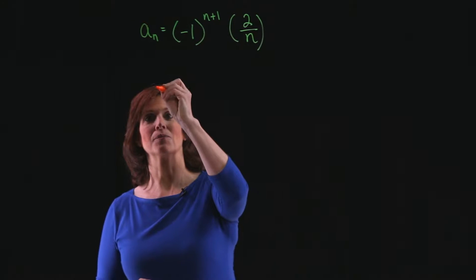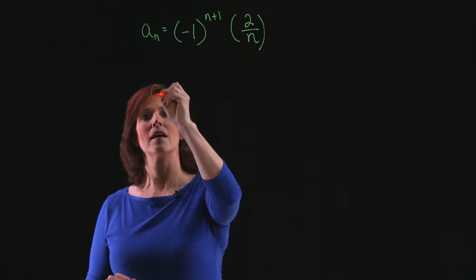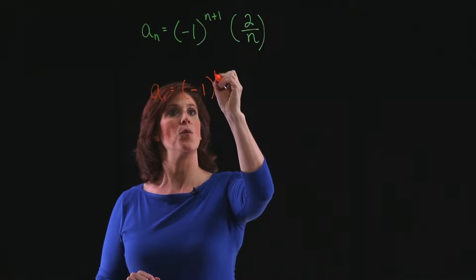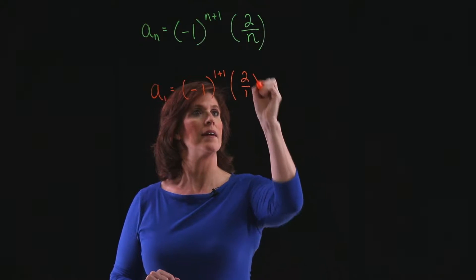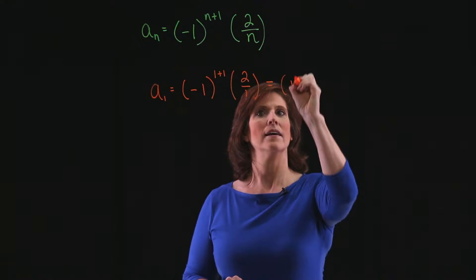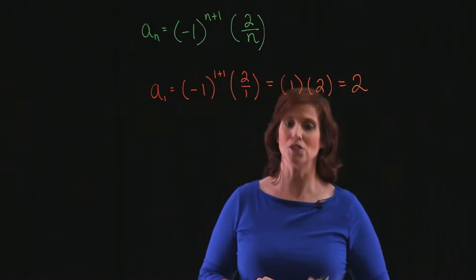So we'll begin by letting n equal 1 to get that first term. So we'll have minus 1 to the 1 plus 1 times 2 over 1. That's minus 1 squared, which is just 1, times 2. And the first term is 2.